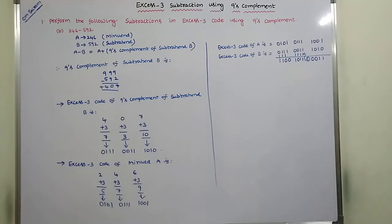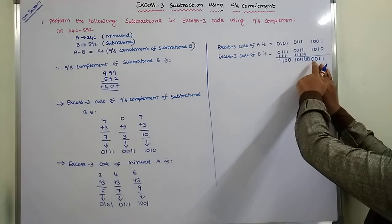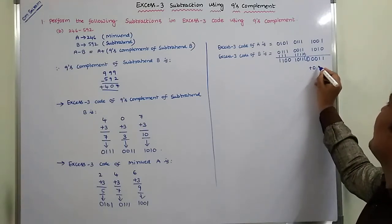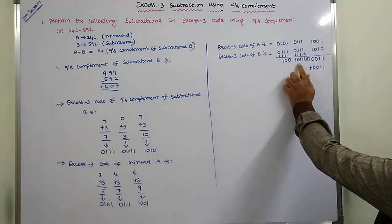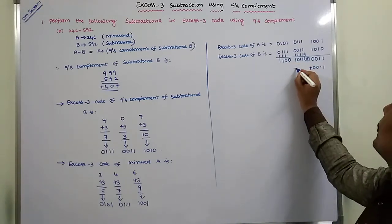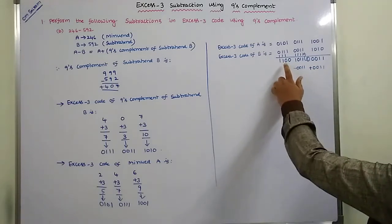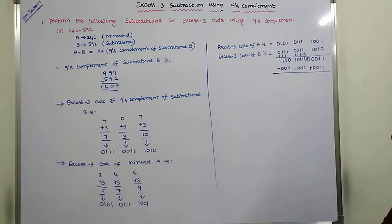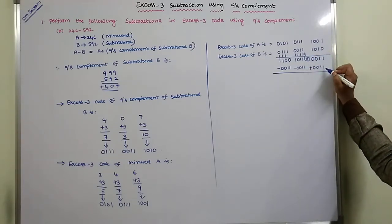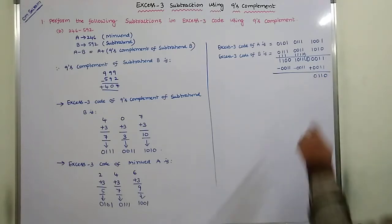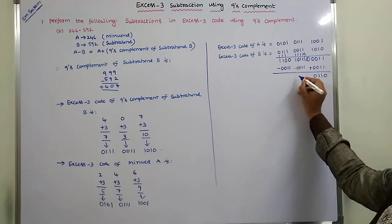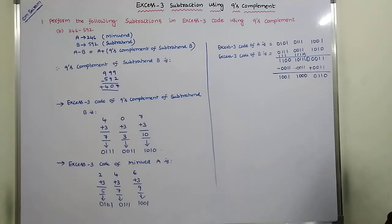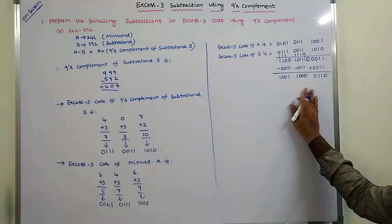Continuing the addition: 1 plus 1 plus 1 is 1 with carry 1; 1 plus 1 plus 1 is 1 with carry 1; 1 plus 1 is 0 with carry 1; 0 plus 0 plus 1 is 1. For the group where a carry is generated, we add 0011; where no carry is generated, we subtract 0011.